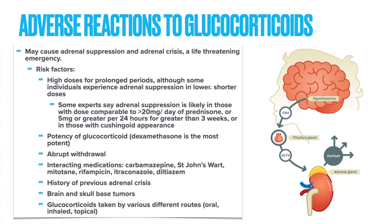Now on to adverse reactions with glucocorticoids. Although reducing inflammation can be very helpful in the treatment of diseases, there is a downside to decreasing the body's immune response. For example, this can increase the patient's susceptibility to infections. Another possible adverse reaction to look out for is that the adrenals may become suppressed, which can cause an adrenal crisis — a life-threatening emergency. The body generally makes its own steroid equivalent, cortisol. Giving oral glucocorticoids in high doses or for long periods of time will eventually suppress the adrenal glands, and the body will no longer produce these necessary hormones such as cortisol on its own.